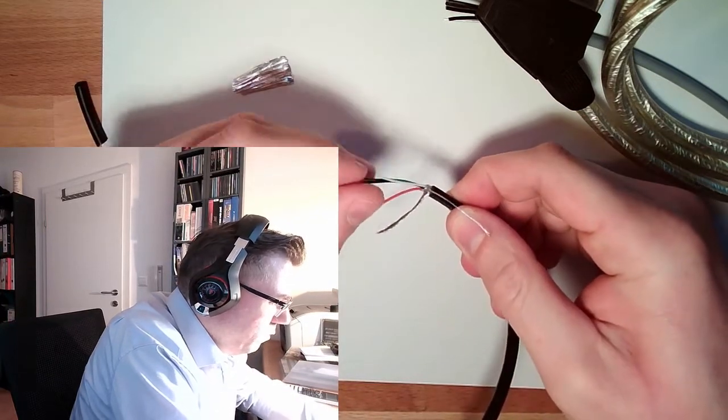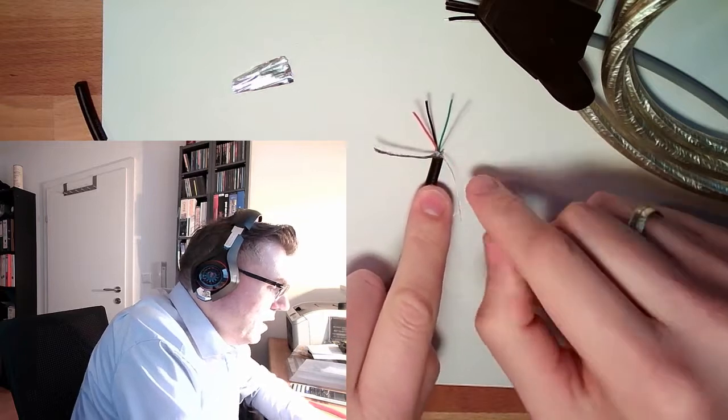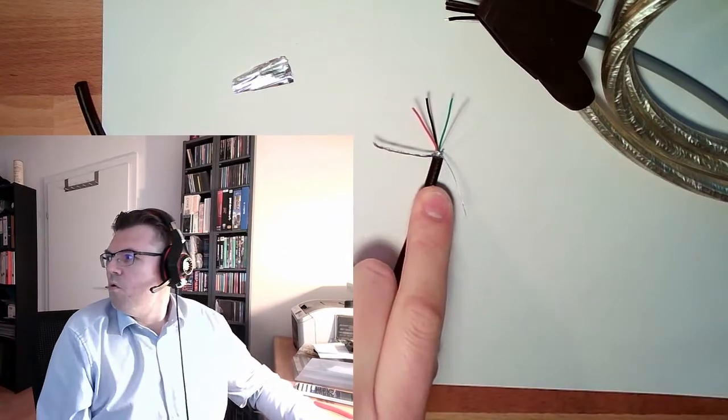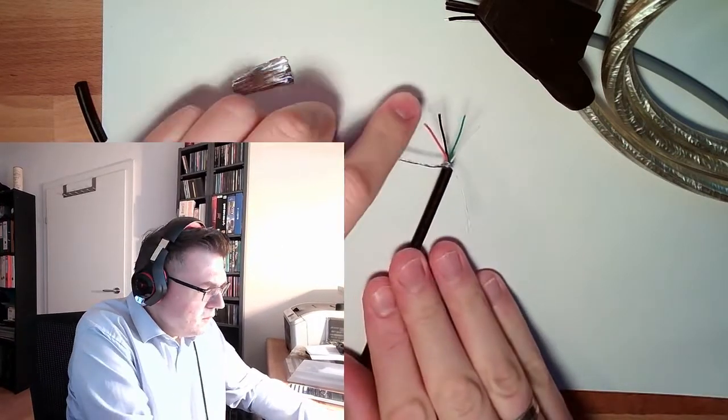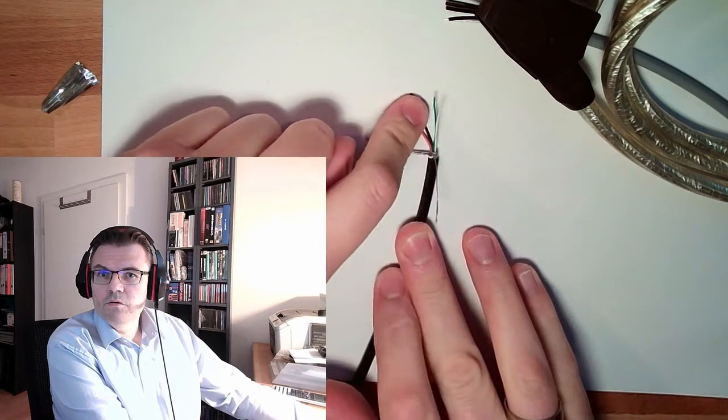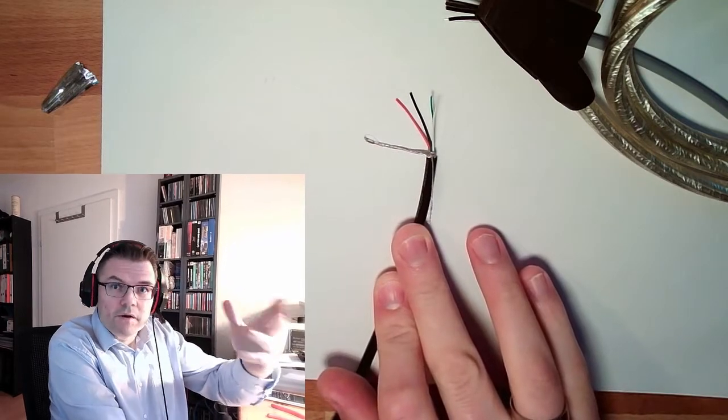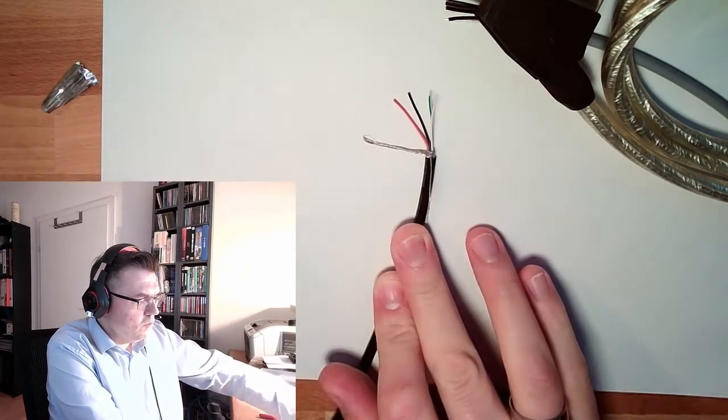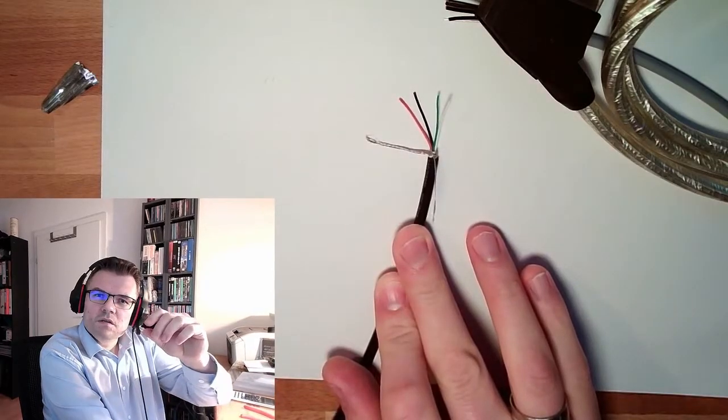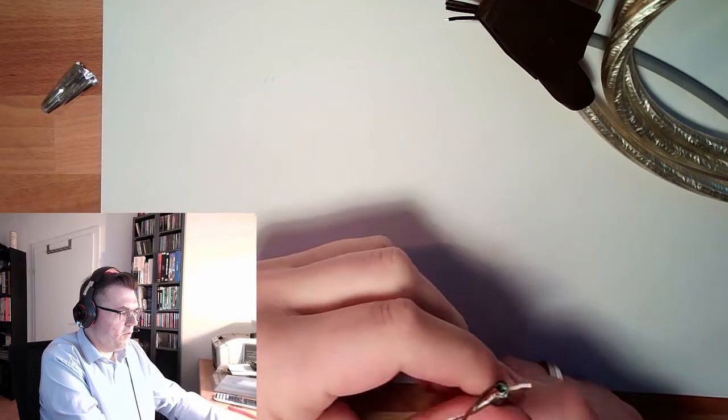And usually, once we cut this foil a little bit open, then it is very easy to rip it off. It belongs also to the shielding. And here inside, we have our cables. We see, we have a white one, a green one, a black one, and a red one. And we also see that the red and the black one are thicker than the green and the white one. Why is that?